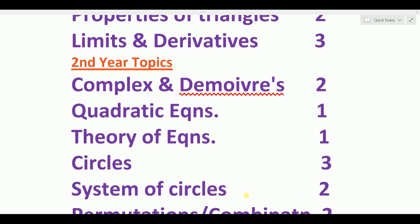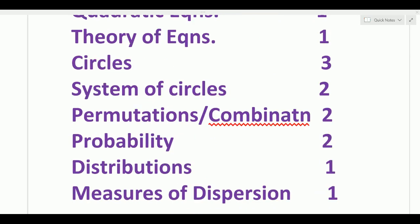System of circles takes two days time. So, you have to spend five days total on circles and system of circles — complete both within five days. Next topic is permutations and combinations — two days time spent. Note: some portions are deleted. You have to follow the plan. Permutations and combinations take two days.